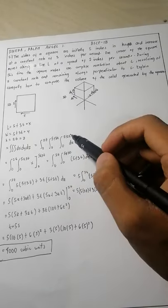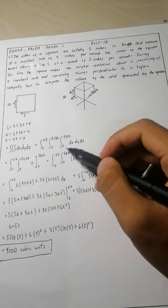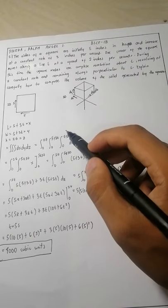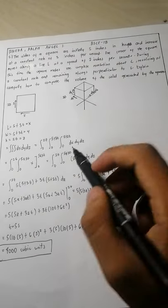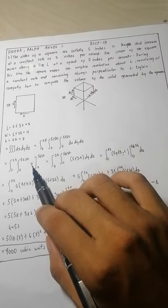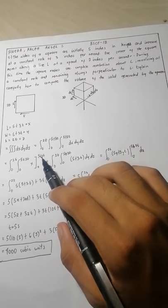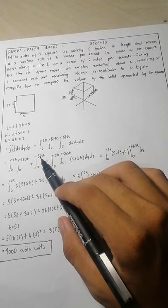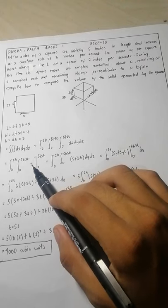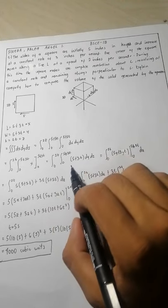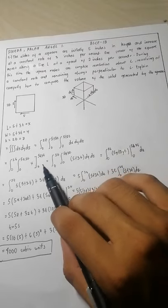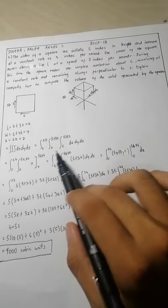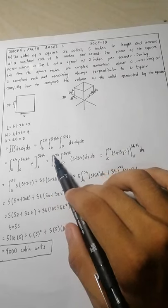The first integration is the innermost one, which is dx: the integral of dx from 0 to 5 plus 3t. The integral of dx is x, evaluated from 0 to 5 plus 3t. Plugging in 5 plus 3t for x, and since the lower bound is 0, the result is 5 plus 3t.